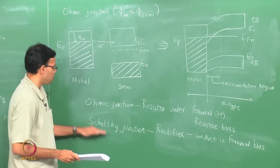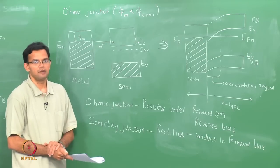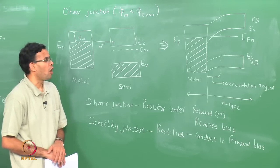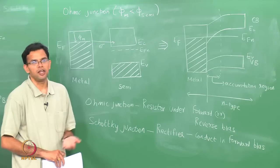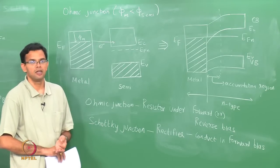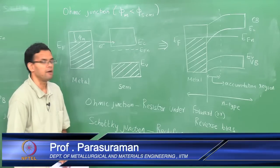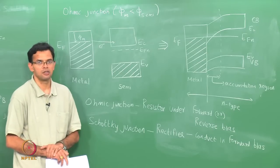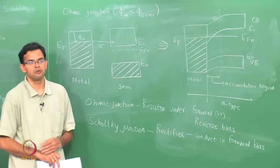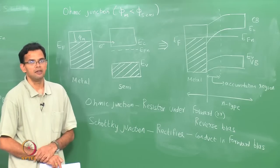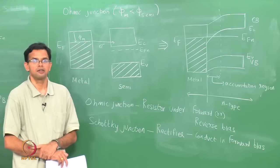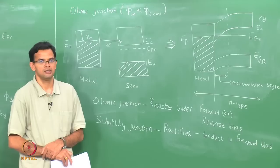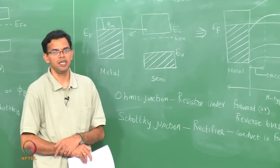The difference between these two junctions depends upon the difference between the work functions of the metal and the semiconductor. All the examples worked out today used an n-type semiconductor, but similar band diagrams apply for p-type material, giving similar ohmic and Schottky junctions. Today we have seen two types of junctions — between two metals and between a metal and a semiconductor. In the next class, we will form junctions between semiconductors, starting with the p-n junction.